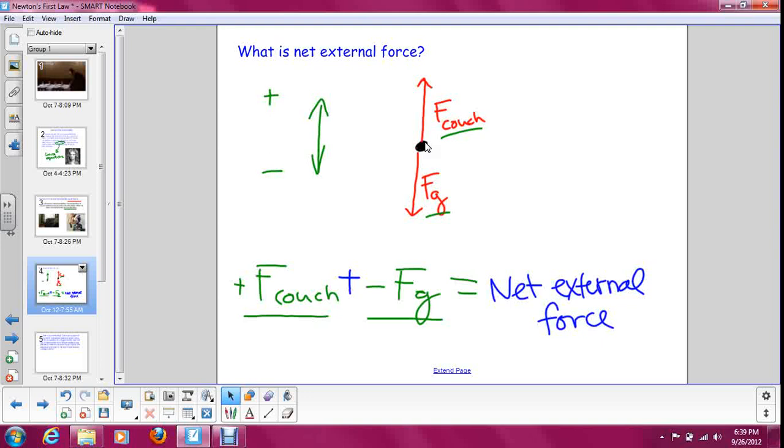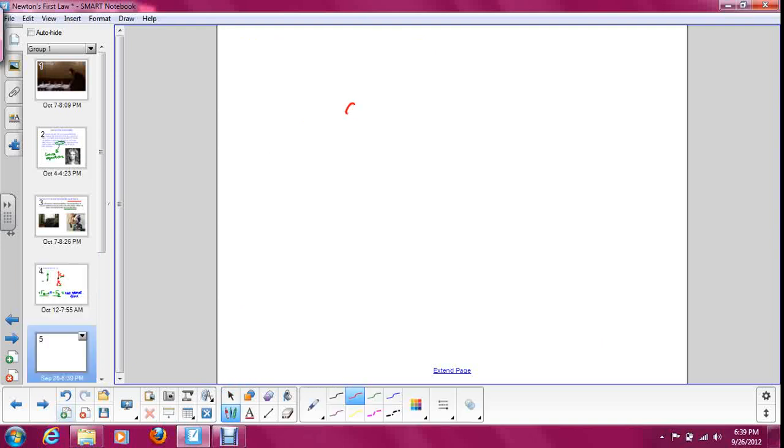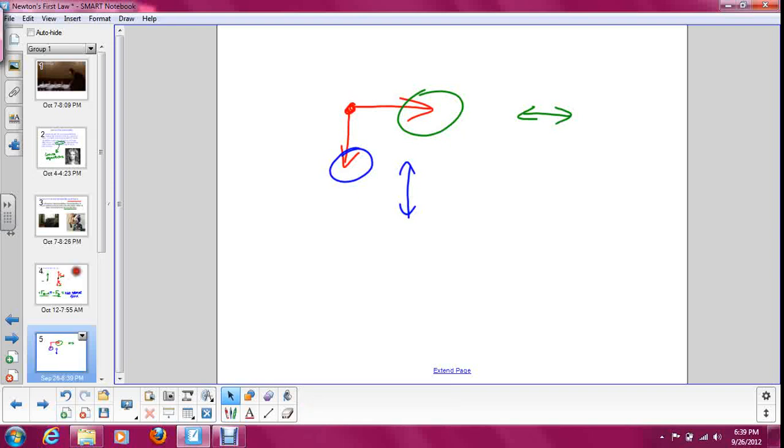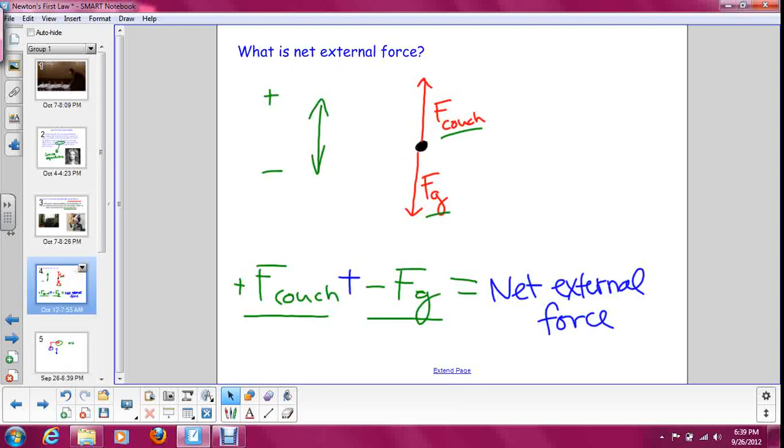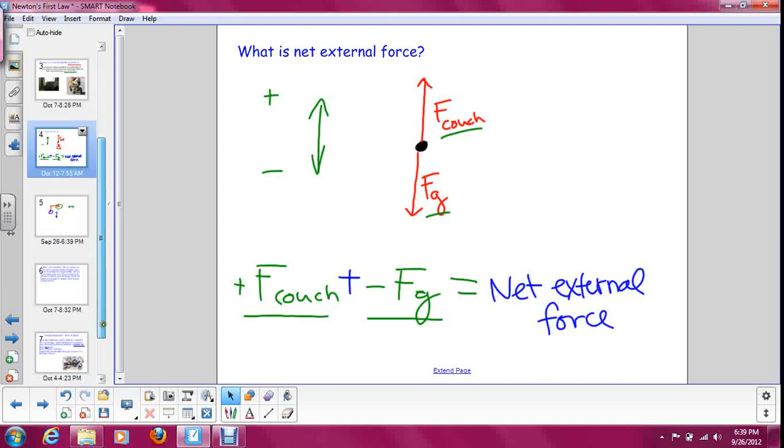When we add forces together, we can only add ones that are in the same direction. So for example, if we had a free body diagram of something that looks like this, we could not add these two forces together because this force is acting horizontally and this force is acting vertically, and we can't add those together. It doesn't work that way. So make sure when you're finding the net external force for objects, you always break it down into up and down forces and side to side forces, and don't mix them together.